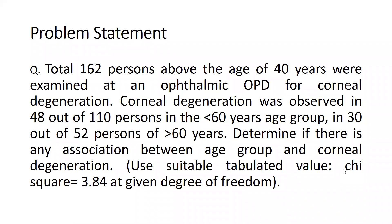A new problem statement has been given by a medical student. A total of 162 persons above the age of 40 years were examined at an ophthalmic OPD for corneal degeneration. Corneal degeneration was observed in 48 out of 110 persons in the less-than-60 age group, and 30 out of 52 persons in the greater-than-60 age group. We are given the tabulated chi-square value of 3.84.